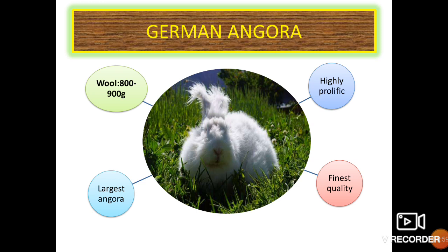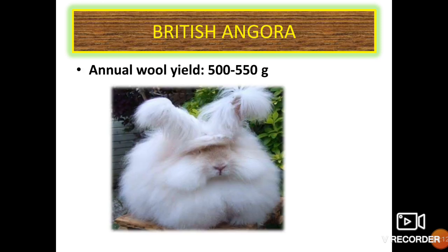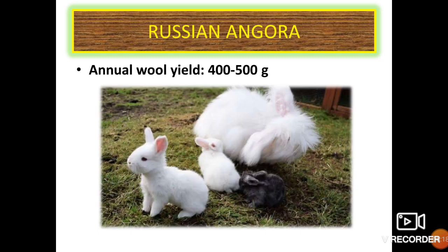The German Angora has an annual wool production of 800 to 900 g; it is the largest Angora breed, highly prolific and produces fine quality wool. The British Angora has an annual wool yield of 500 to 550 g per year. The Asian Angora has an annual wool yield of 400 to 500 g.